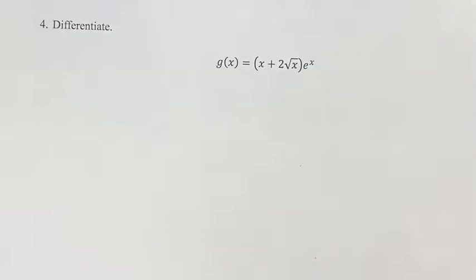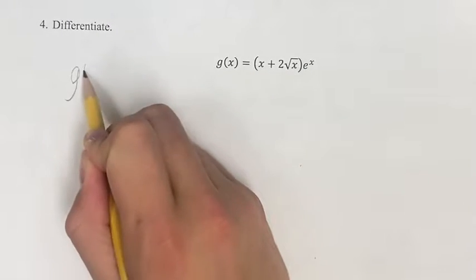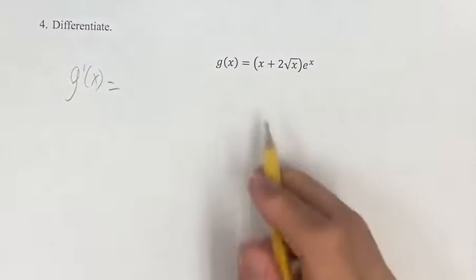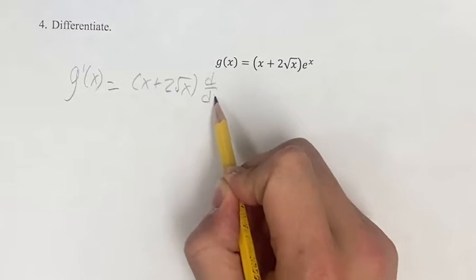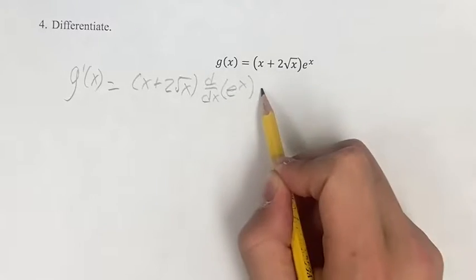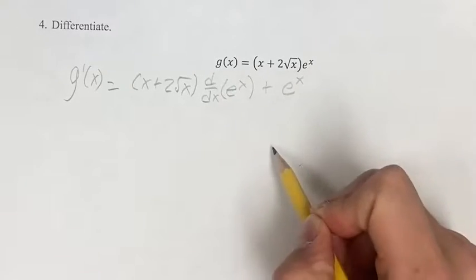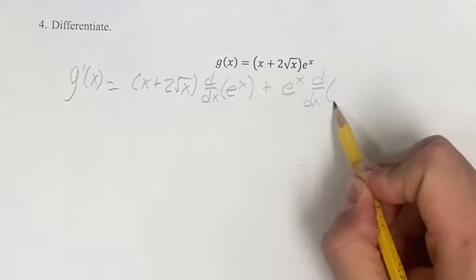We're going to do that using the product rule. Getting our derivative written out right here, we're going to have the first term, x plus 2 root x, times the derivative of the second term, e to the x, plus the second term, e to the x, times the derivative of the first term.